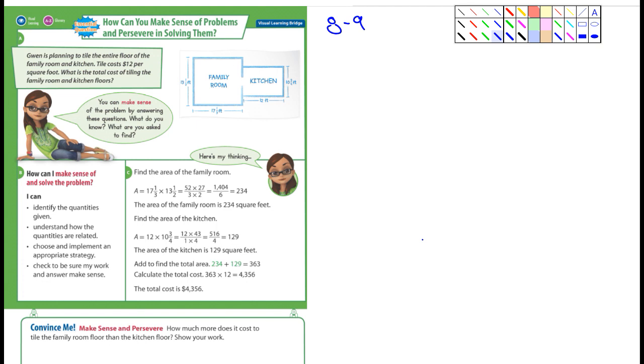It's asking, it says Gwen here is planning to tile the entire kitchen floor of the family room and the kitchen. So here's the family room and here's the kitchen. She's going to tile these floors. And it says what's the total cost of tiling the family room and the kitchen floors? So they're not talking about perimeter, they're talking about area.